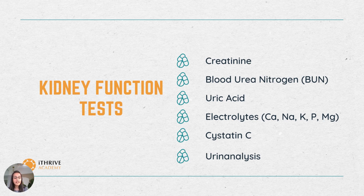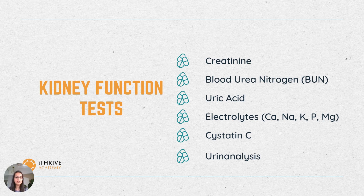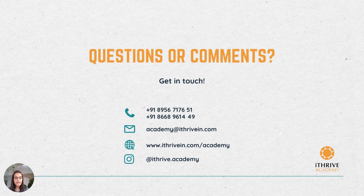Electrolytes like calcium, sodium, potassium, phosphorus, and magnesium can also be good indicators of kidney function. There is also a test for cystatin C, an enzyme produced particularly in the kidneys whose levels are directly indicative of kidney function. Lastly, urinalysis is not a blood test — it is the examination of your urine, which helps identify abnormal constituents and any underlying disease. If you have any questions related to this video, you can ask in the comments, stay tuned for further updates, and please subscribe to the channel. Thank you.